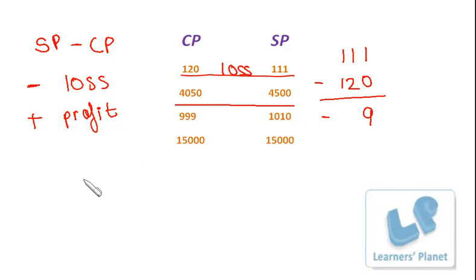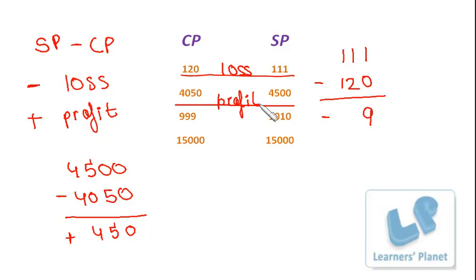Now, for the second one, we have, again we'll subtract CP from SP. So, that's 4500 minus 4050. Now, if you subtract, you'll get 450. So, this is positive 450. That's why it will be profit.